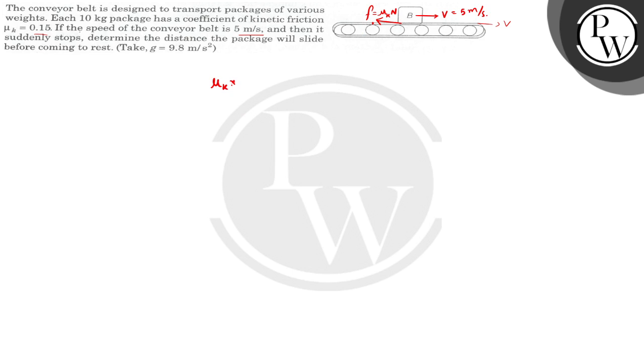So μk times mg must equal m times a, and this is a retardation. Therefore a equals μk times g. Let's see, the acceleration value is going to be 0.15 multiplied by 9.8. This equals 1.47 meters per second squared.